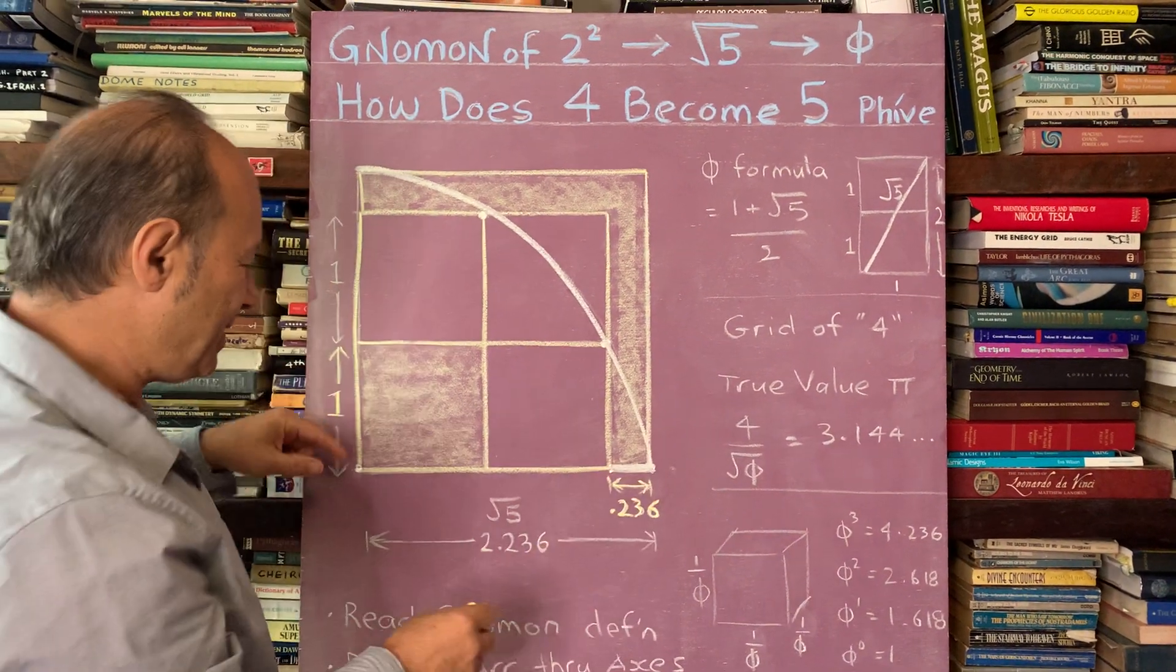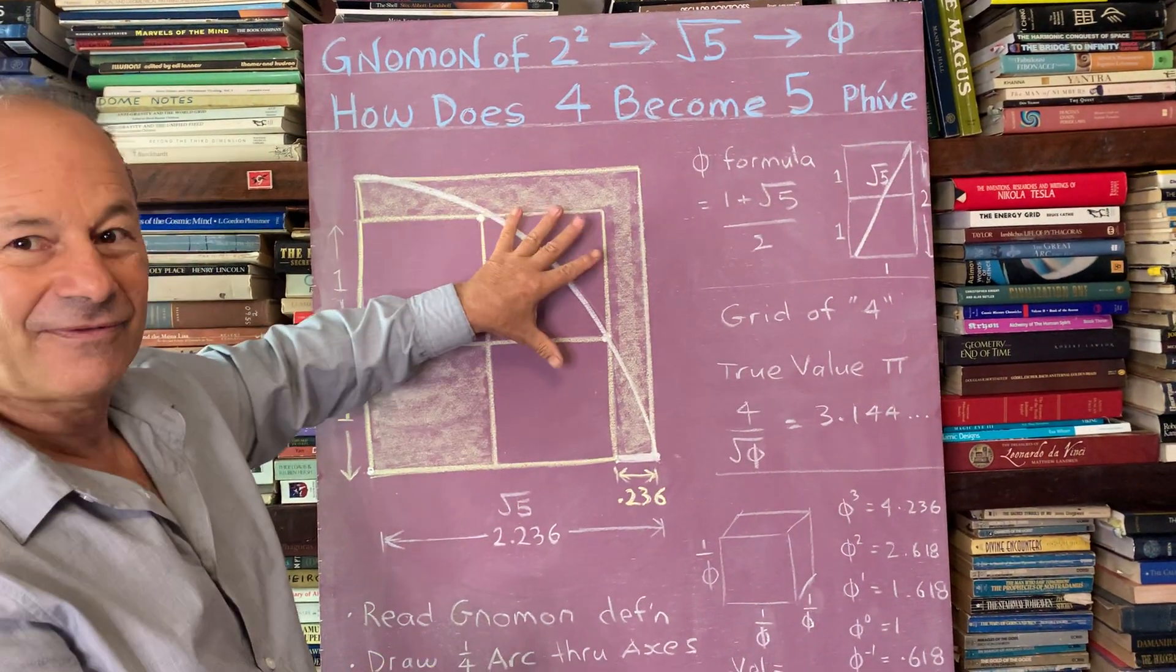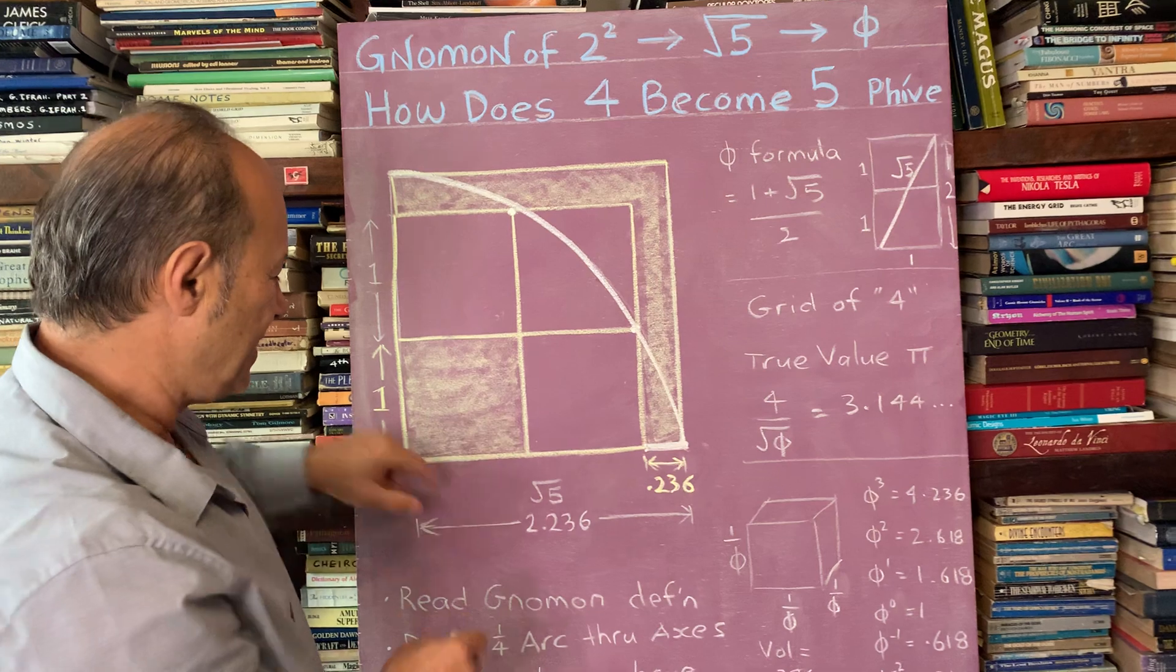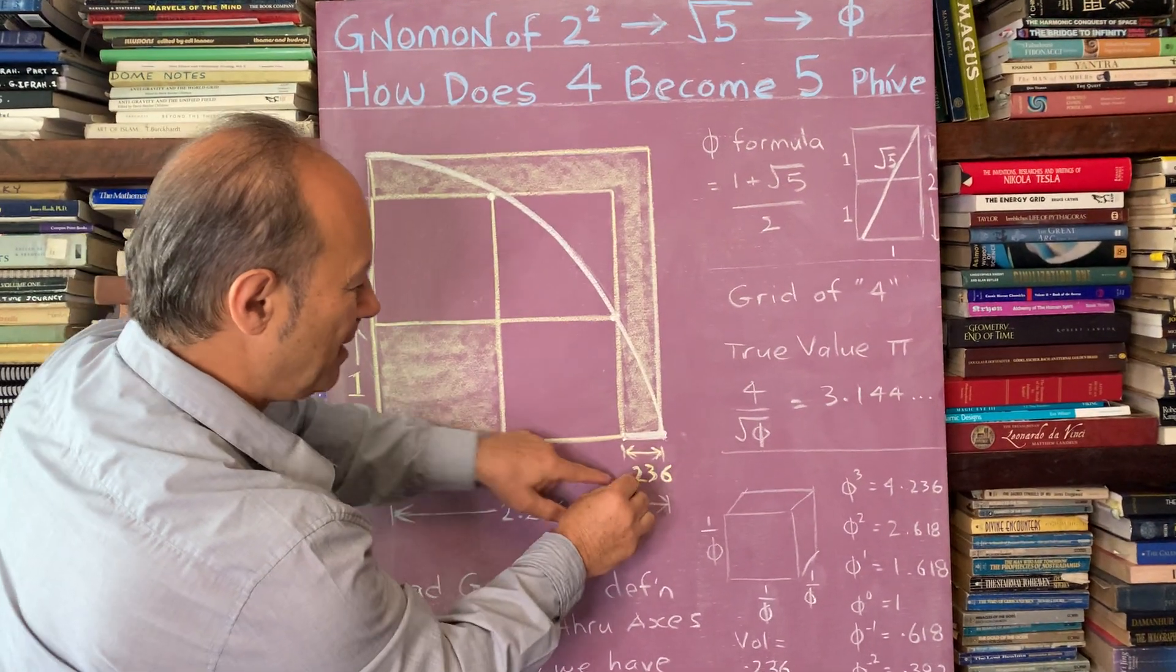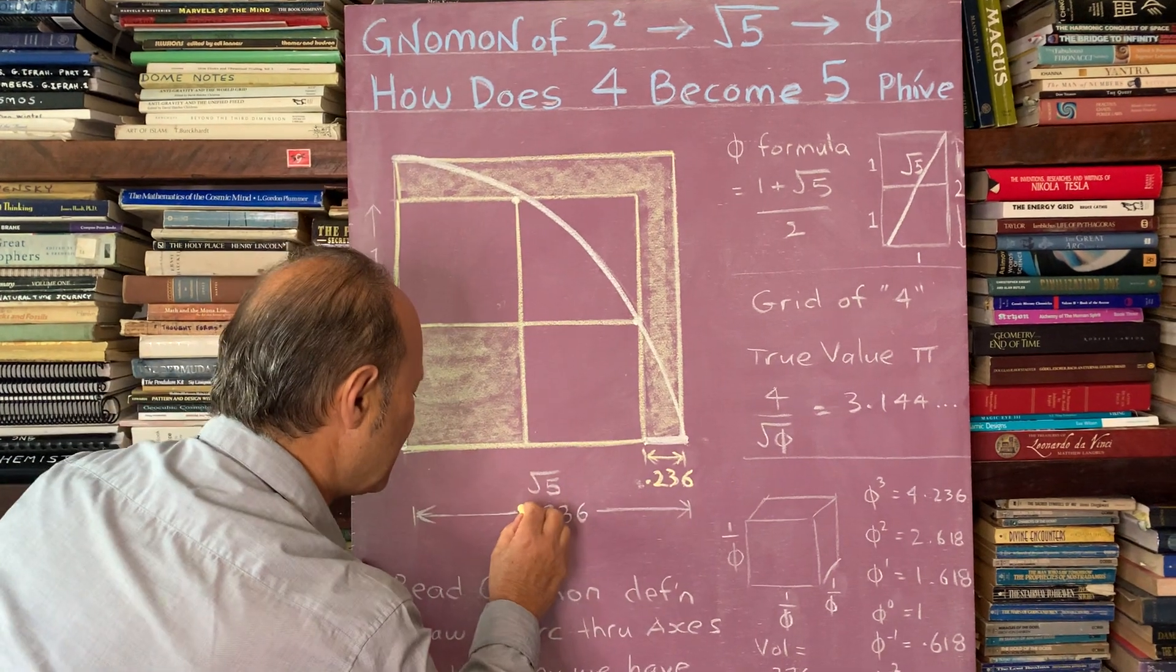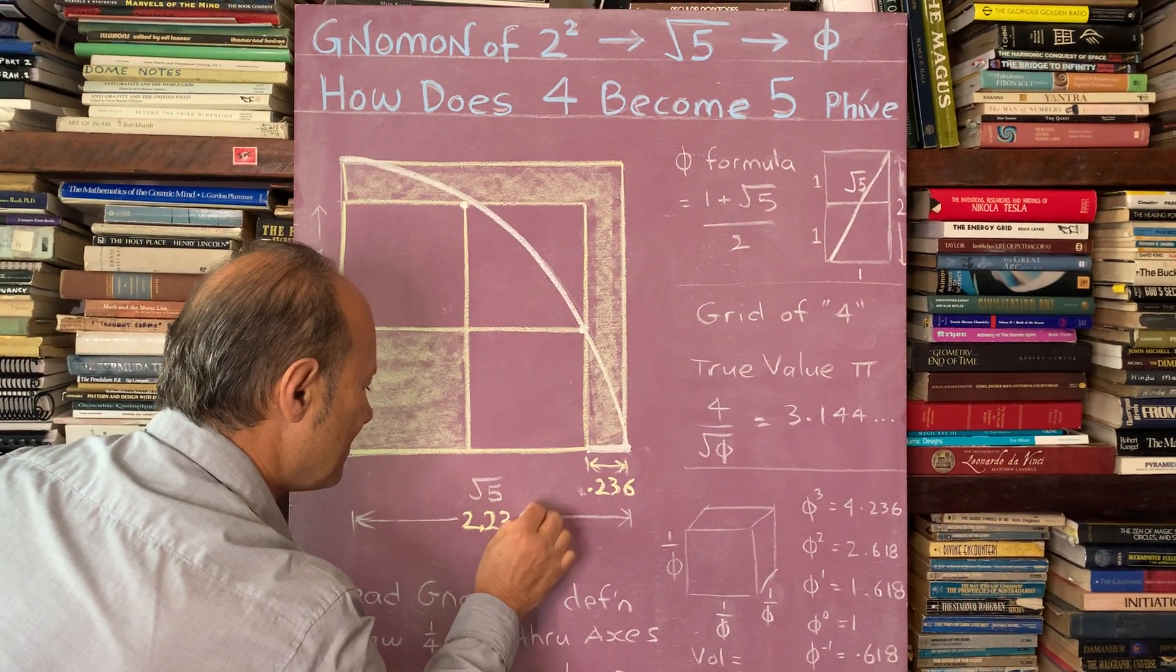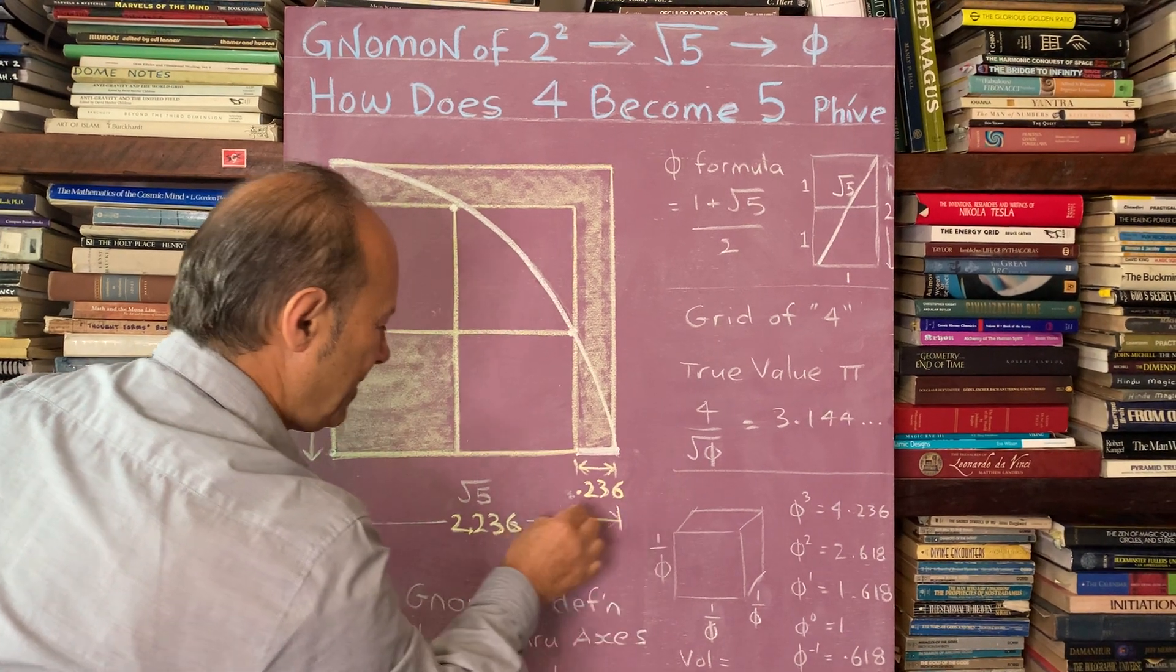That means the whole distance of this new square that has a square area of 5 is 2 plus 0.236. So 2 plus 0.236 is 2.236. That's that area here.